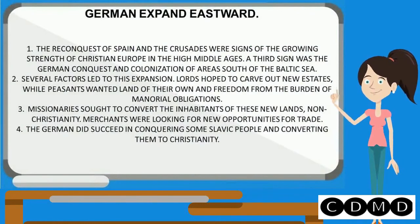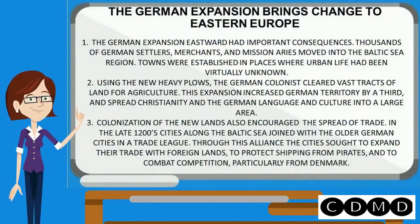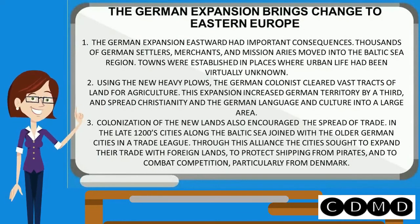German expansion eastward. The reconquests of Spain and the crusades were signs of the growing strength of Christian Europe in the High Middle Ages. A third sign was the German conquest and colonization of areas south of the Baltic Sea. Several factors led to this expansion — lords hoped to carve out new estates, while peasants wanted land of their own and freedom from manorial obligations. Thousands of German settlers, merchants, and missionaries moved into the Baltic Sea region, and towns were established in places where urban life had been virtually unknown.